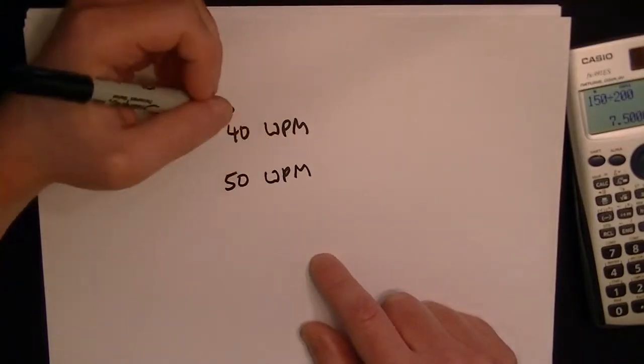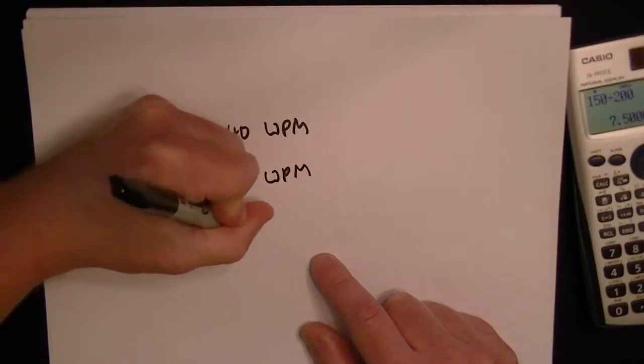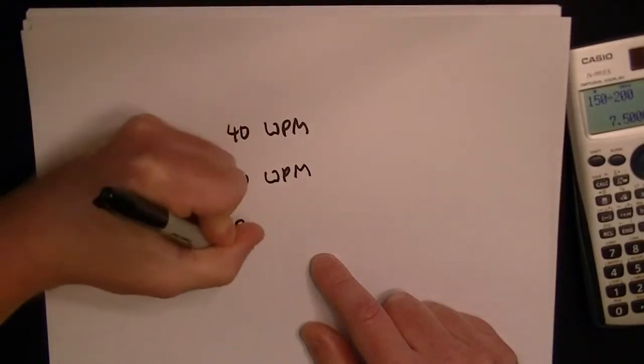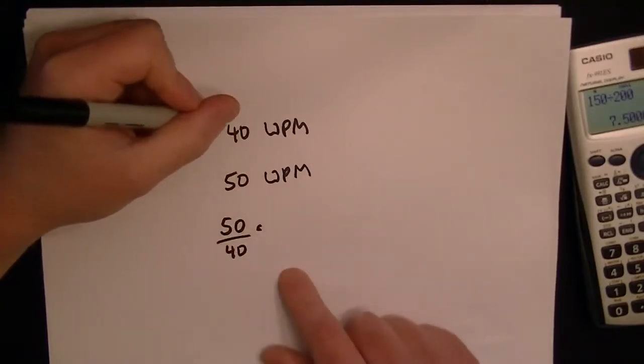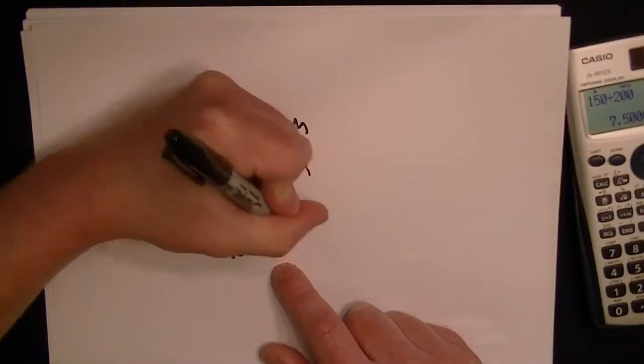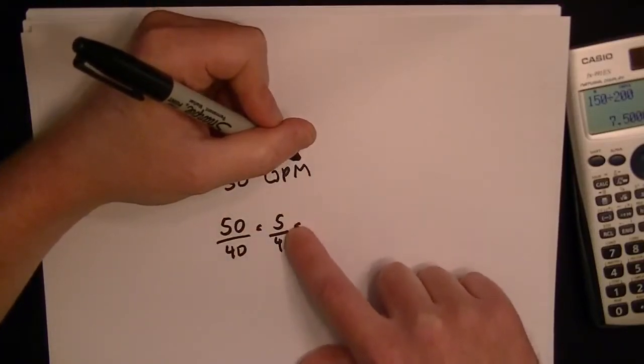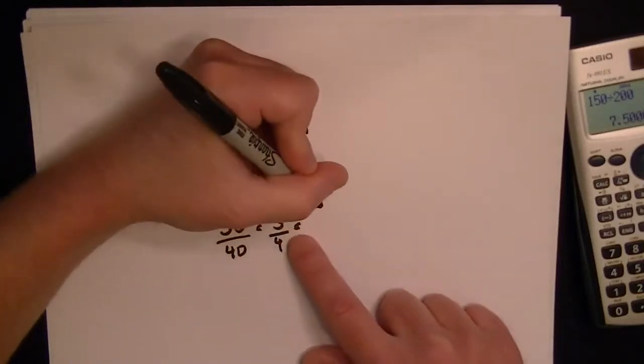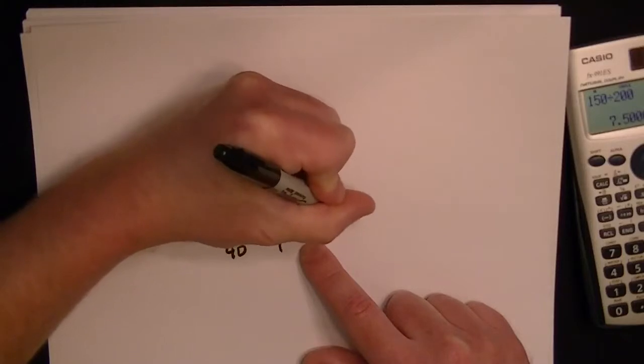So the way to do this is you can take 50 as the new value divided by the old value of 40. And if you work this out, we can simplify to 5 fourths, and this is one quarter, or one fourth more than four fourths. So it's like one and one fourth, so it's equal to 1.25.